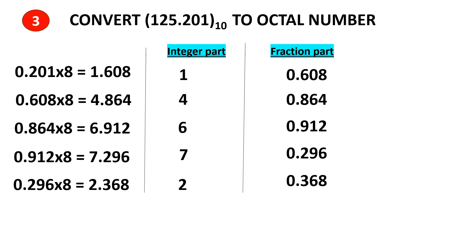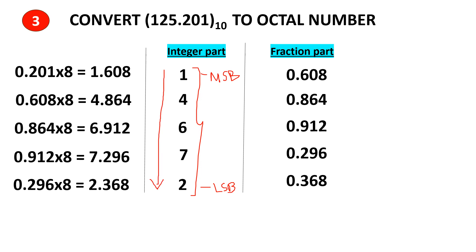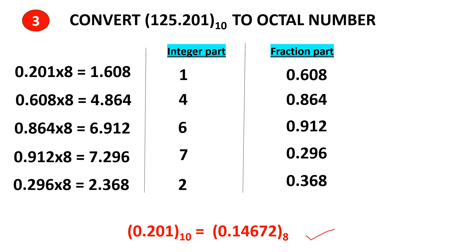Take 0.296 and multiply by 8 and you get 2.368; 2 is the integer part and 0.368 is the fraction part. We repeat this until the fraction part becomes 0, but in this case it does not become 0 — it goes without end, so we stop here. From the integer parts we get the octal number. This forms the MSB and this is the LSB. The answer is written from top to bottom.